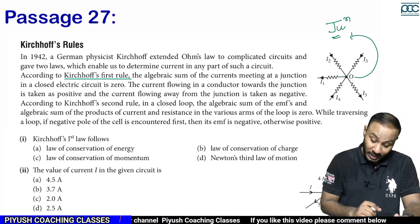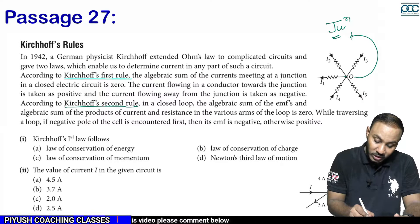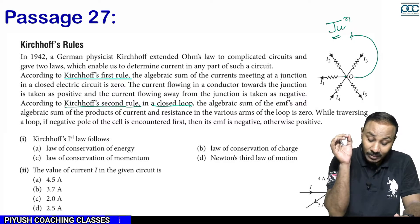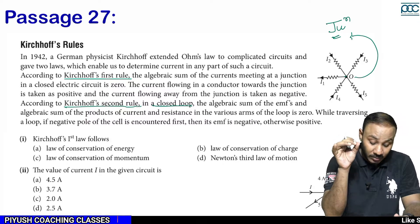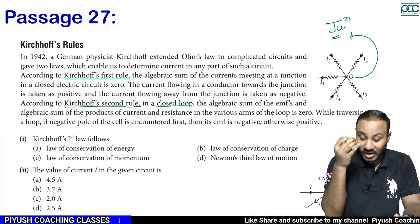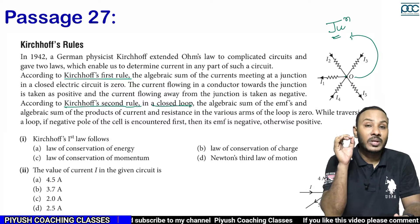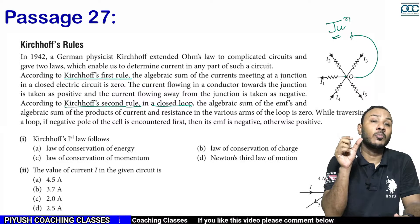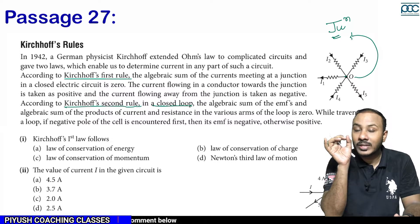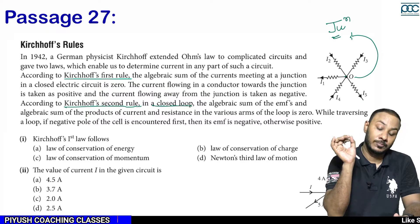According to Kirchhoff's second rule — the mesh rule or closed loop rule — the algebraic sum of EMF and the algebraic sum of the products of current and resistance in various arms of the loop is zero. That is, in any closed loop, the algebraic sum of all potential differences is zero. This is based on conservation of energy.